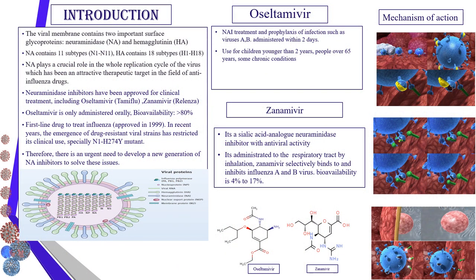The viral membrane contains two important surface glycoproteins: neuraminidase and hemagglutinin. Neuraminidase contains 11 subtypes and hemagglutinin contains 18 subtypes. Neuraminidase plays an important role in the whole replication cycle of the virus, which has been an attractive therapeutic target in the field of antiviral influenza drugs. We have two approved drugs, oseltamivir and zanamivir, both used for treatment and prophylaxis of infection with virus A and B, and both are considered neuraminidase inhibitors.